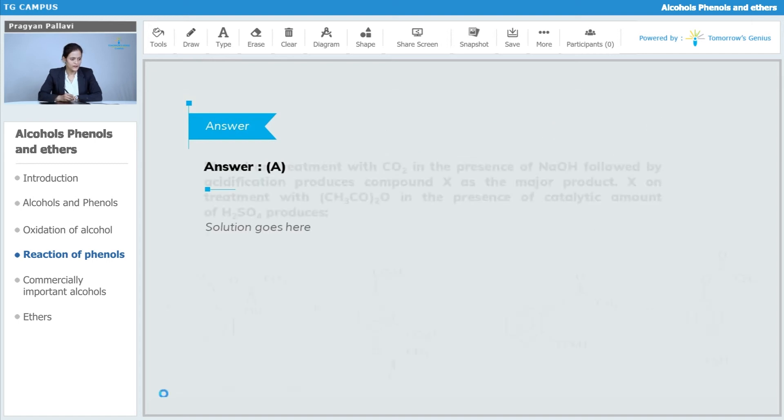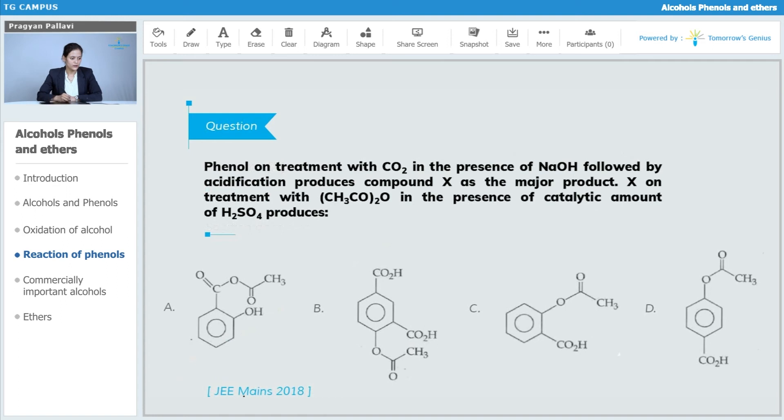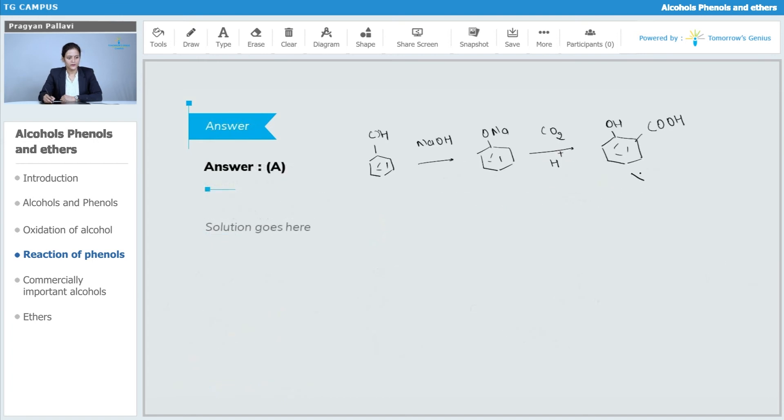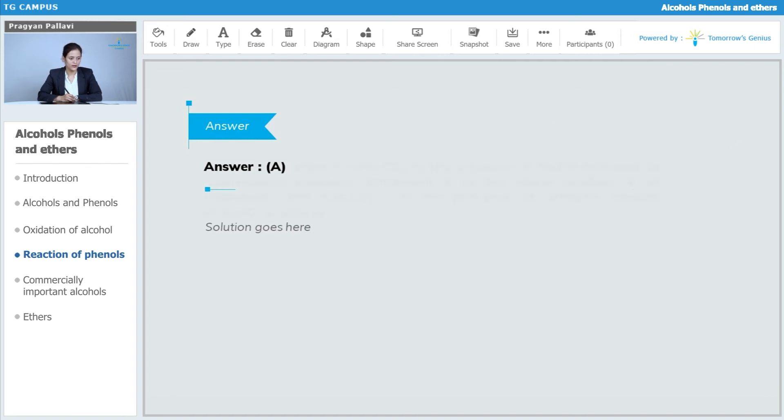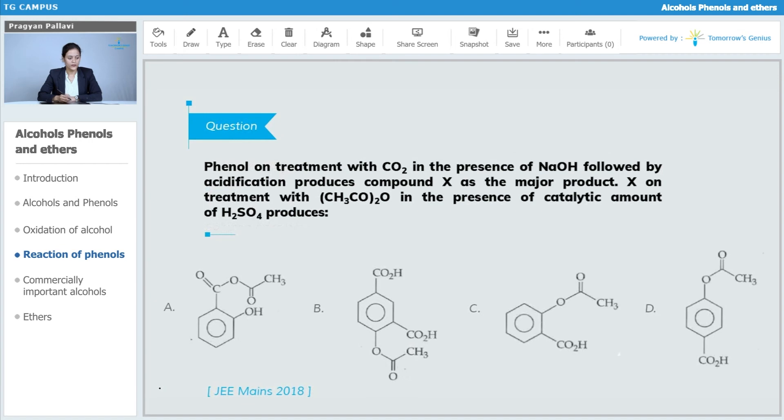Then, the question says that this X is definitely salicylic acid. This is the X which is formed after reaction of phenol with sodium hydroxide and carbon dioxide in presence of acid, which is basically Kolbe's reaction.